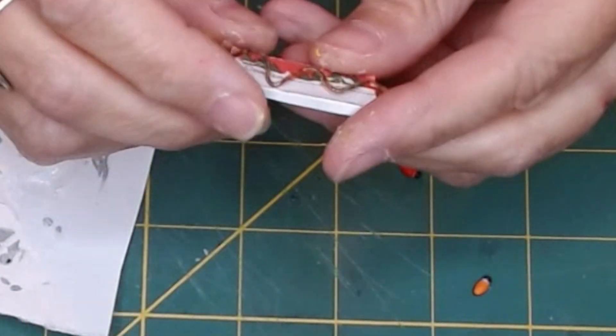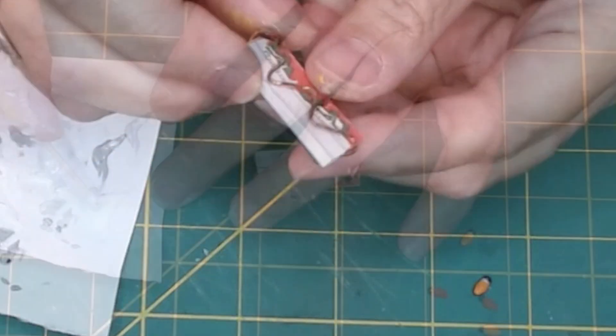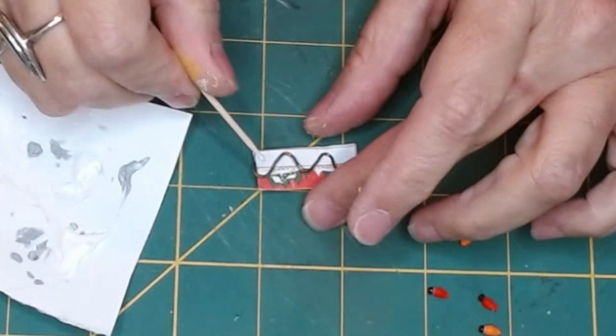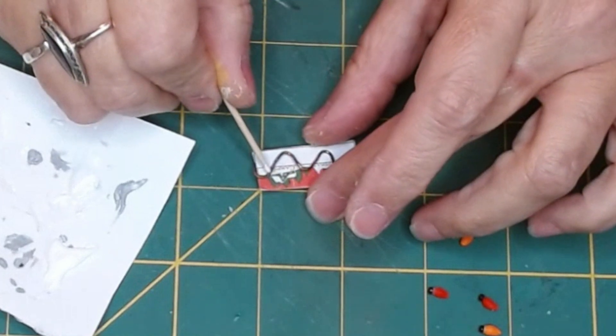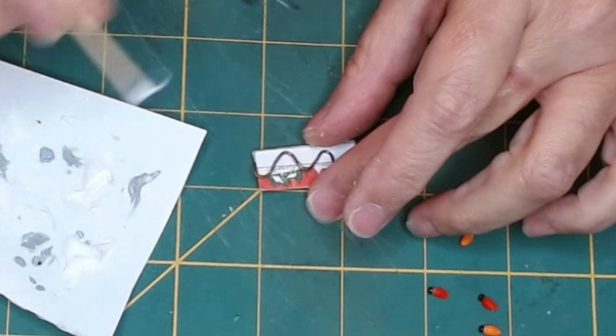Now it's time to add the bulbs to the cord. I'm gonna use tacky glue, put a good amount on the cord and then lay down the bulbs and begin to arrange them how I want them to sit.